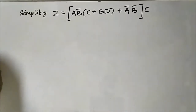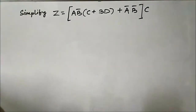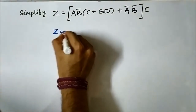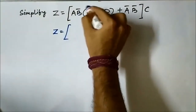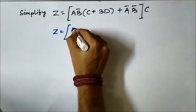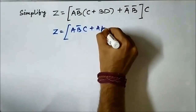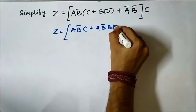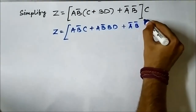Now we will solve another Boolean expression and simplify it using the rules of Boolean algebra. Let us keep the square bracket intact and open the inner brackets: ab̄c plus ab̄d plus āb̄c.